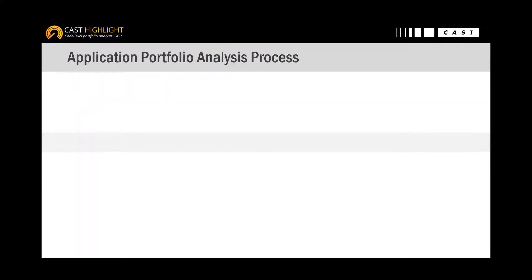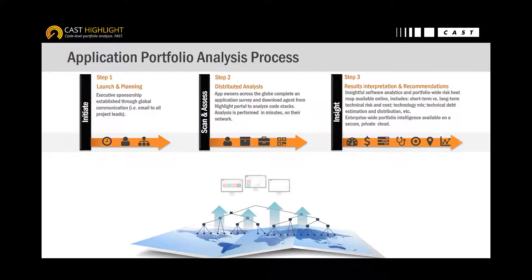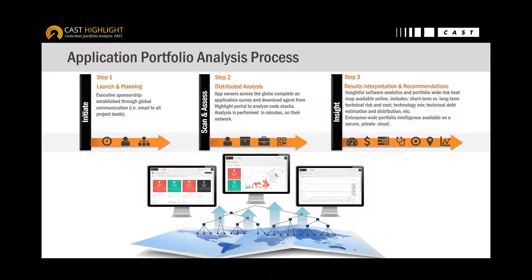So far we've mentioned objectivity and velocity. To be complete, we have to make sure that the measurement stays repeatable as well as cost and time efficient. CAST Highlight uses assessment campaigns that invite application owners to answer a short survey and to execute a local agent to scan the code. This analysis happens locally, and only the results of the scan are uploaded to the portal — in other words, the code never leaves the company. As soon as the assessment process is done, you can leverage key analytics at both portfolio and application levels directly through our web front-end.